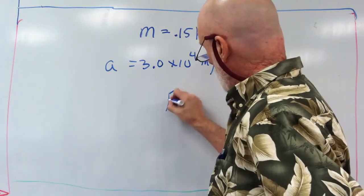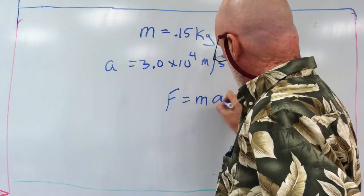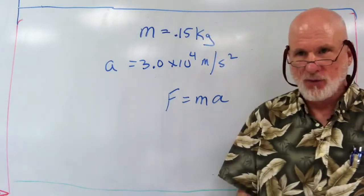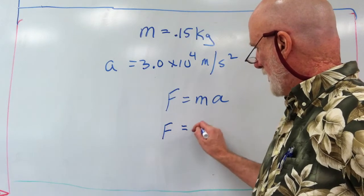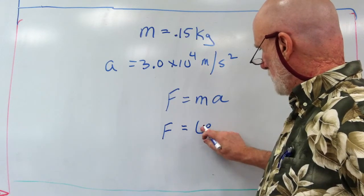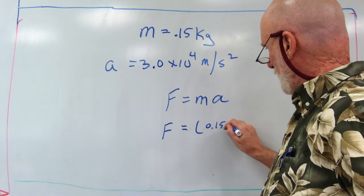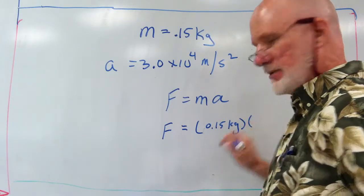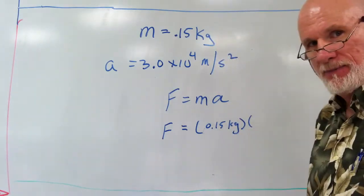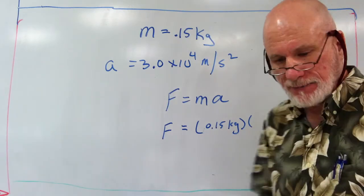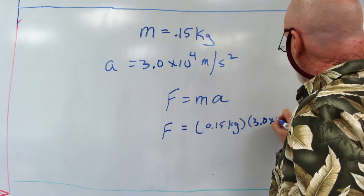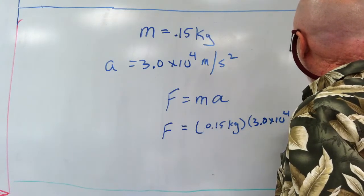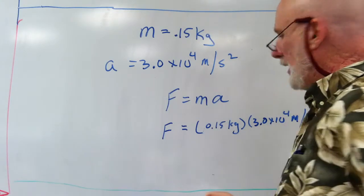So you're going to say, as you know, F equals MA, correct? Force equals MA. And the force is going to be 0.15 kilograms, right? You got it? Zach, you with me? Yeah. Excellent. Times 3.0 times 10 to the 4th meters per second squared. Okay? And that's all there is to it.